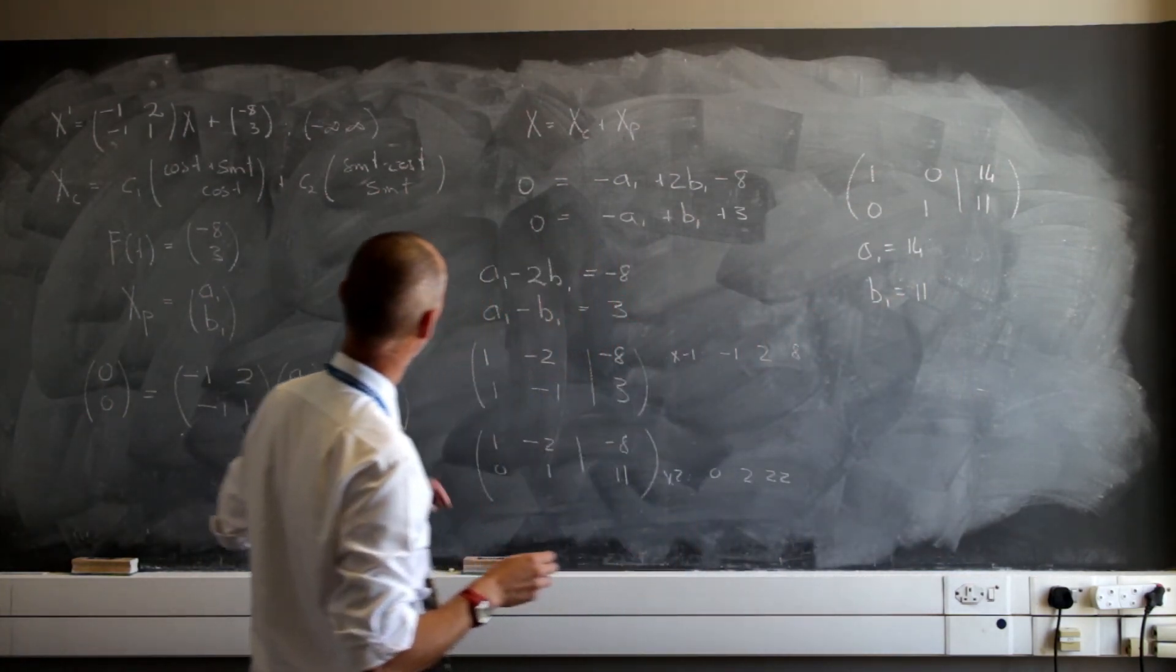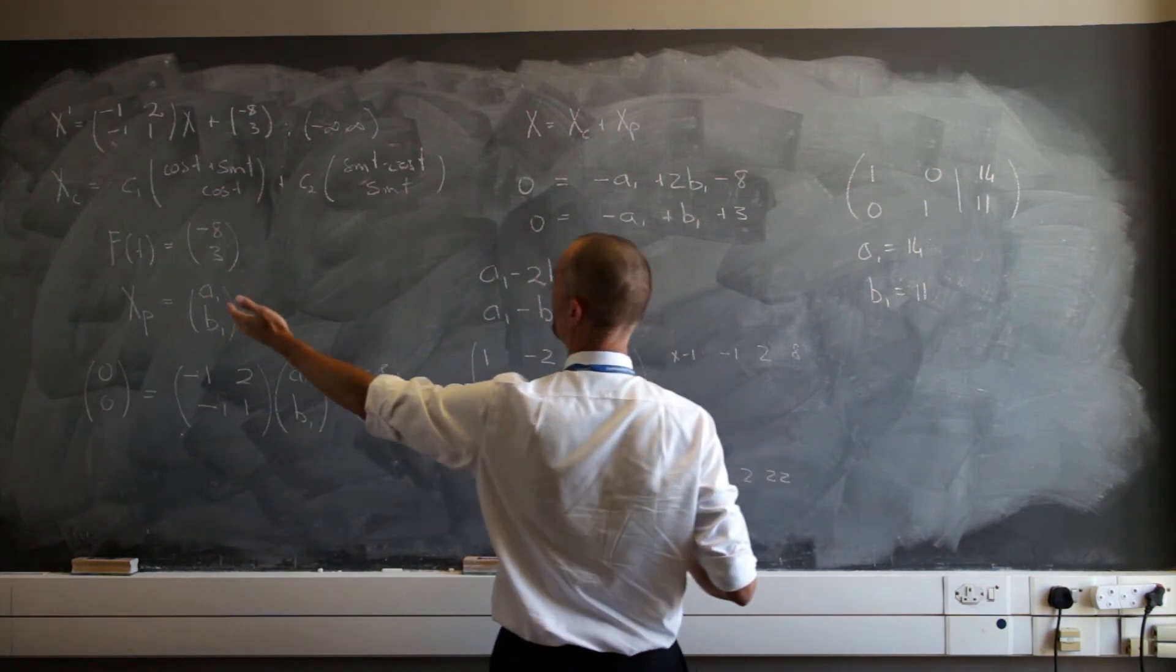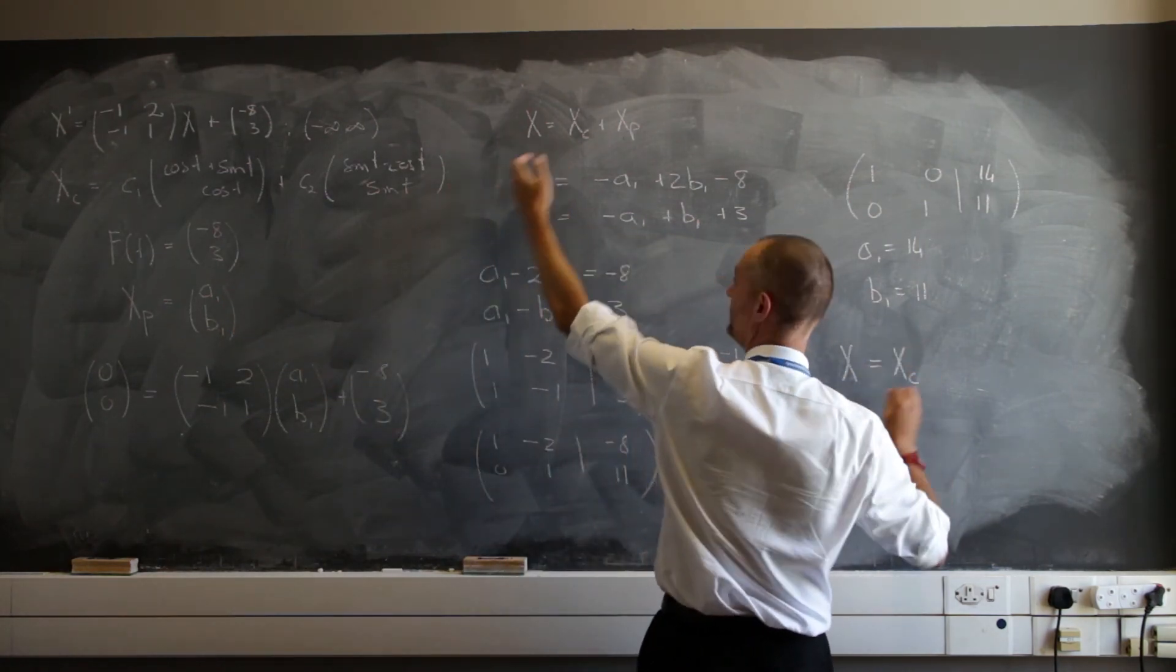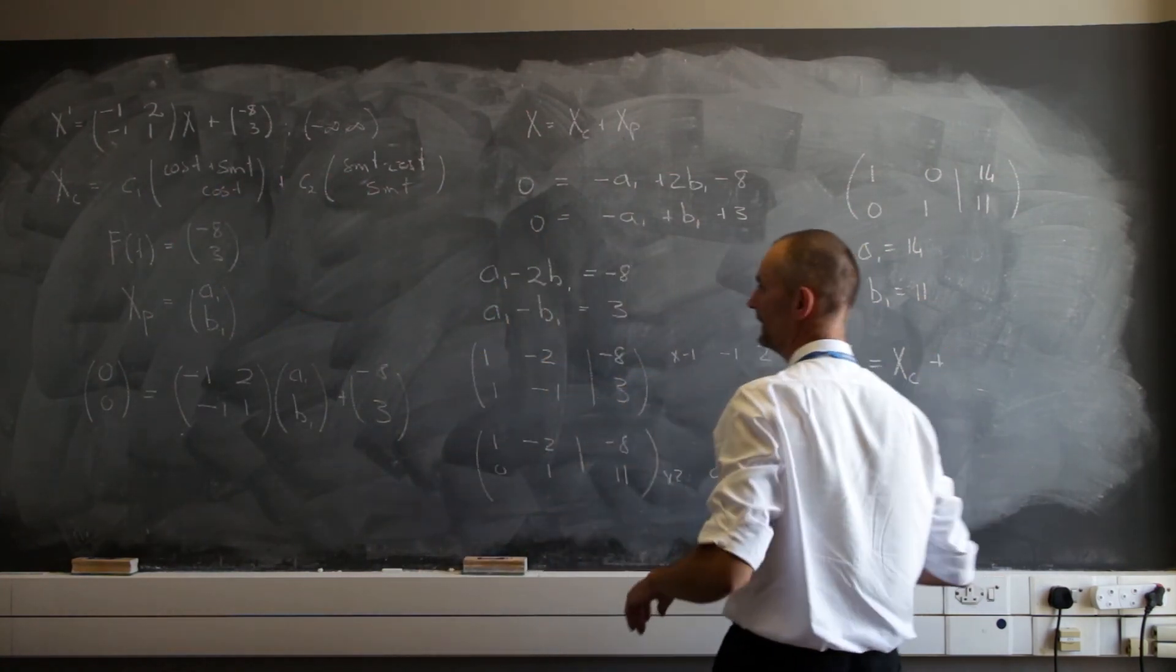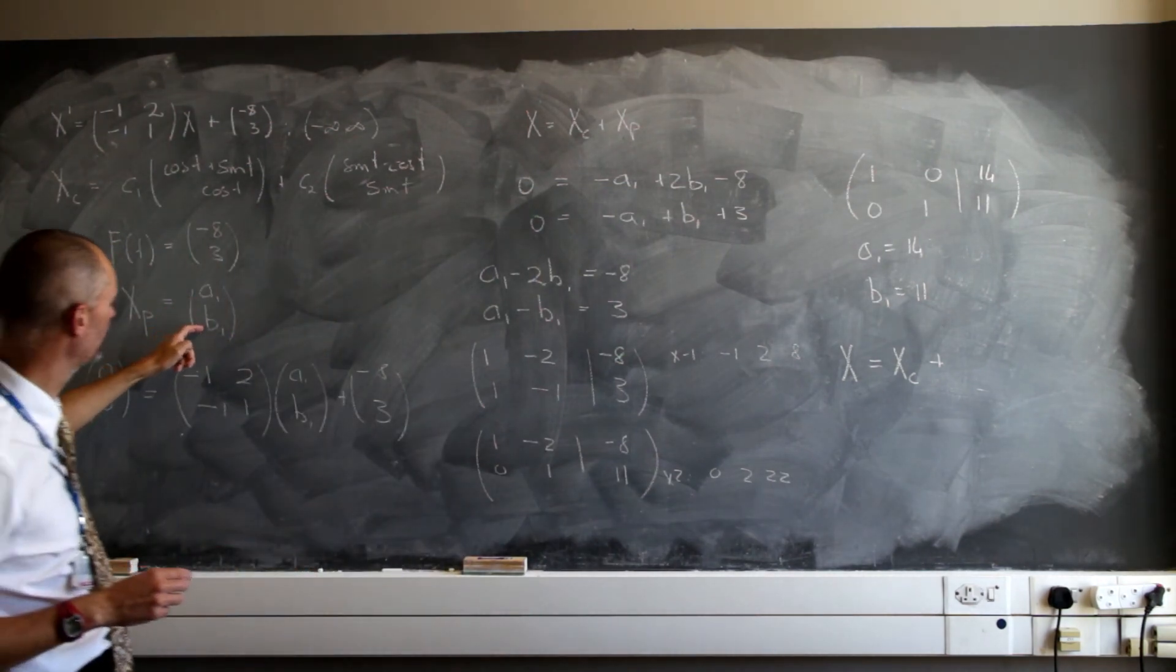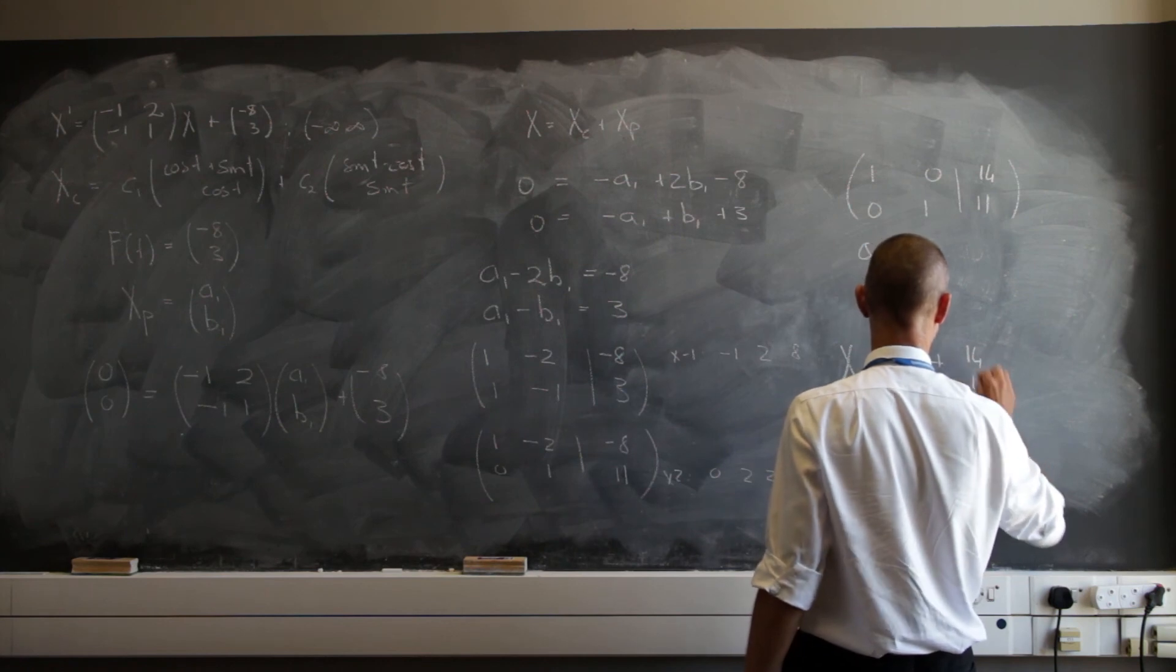Therefore, I can write my whole answer. So x is going to be x sub c, which is this section here. I won't rewrite that. Plus x sub p. And now I know the values for a sub 1 and b sub 1, which is going to be plus 14 and 11.